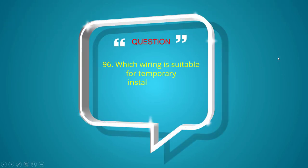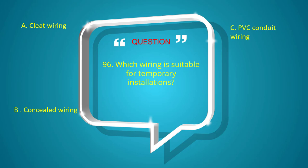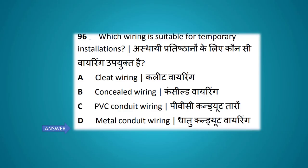Which wiring is suitable for temporary installation? Options: cleat wiring, concealed wiring, PVC conduit wiring, metal conduit wiring. The answer is cleat wiring.